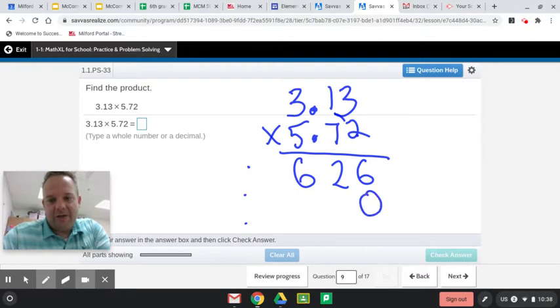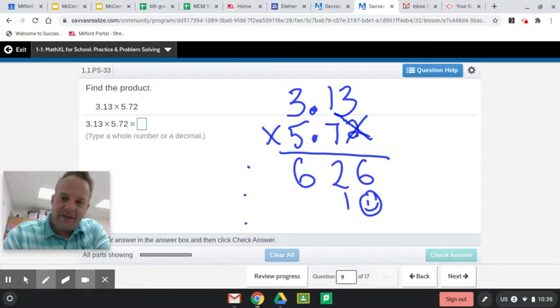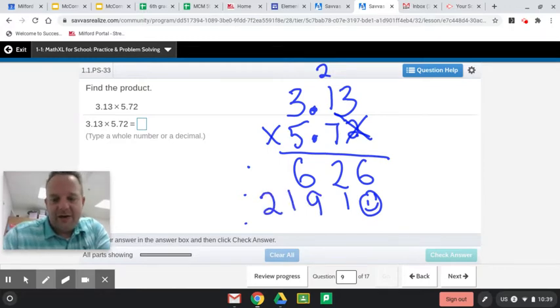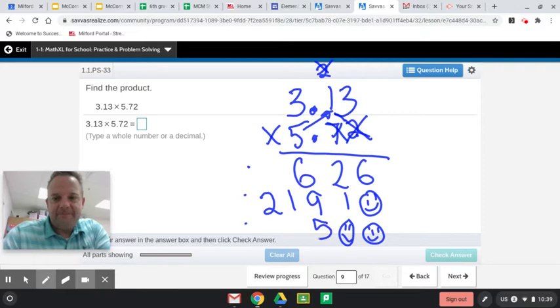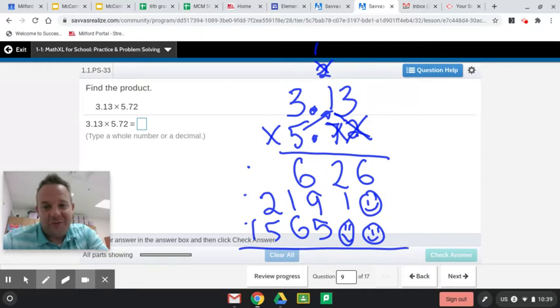And now 1 placeholder is 0. So I've already used this 2. I'm going to cross it out. 7 times 3 is 21. Carry the 2. 7 times 1 is 7. Plus 2 is 9. And 7 times 3 is 21. All right. Now we've already used that 7 and that 2. Now when we do the 5 times 3 here, guys, I'm going to add 2 placeholder 0s. 2 placeholder 0s. 5 times 3 is 15. And 5 times 1 is 5. Plus 1 is 6. And 5 times 3 is 15. I'm going to add up all these partial products.